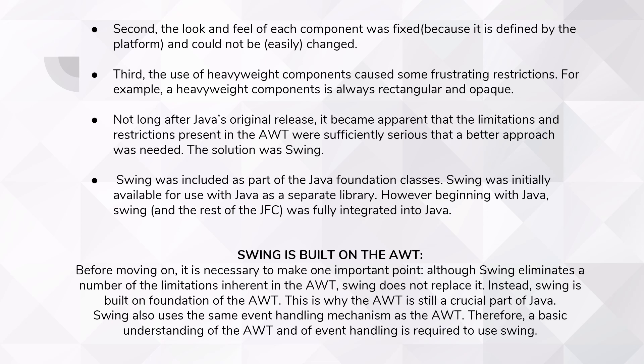One important note to keep in mind is that Swing eliminates a number of limitations in AWT, but Swing does not replace it. Instead, Swing is built on the foundation of AWT, which is why the AWT is still a crucial part of Java. Swing also uses the same event handling mechanism as the AWT. Therefore, a basic understanding of AWT and of event handling is required to use Swing. In simple words, AWT wasn't replaced by Swing — consider a building: the foundation is AWT and the structure is Swing.